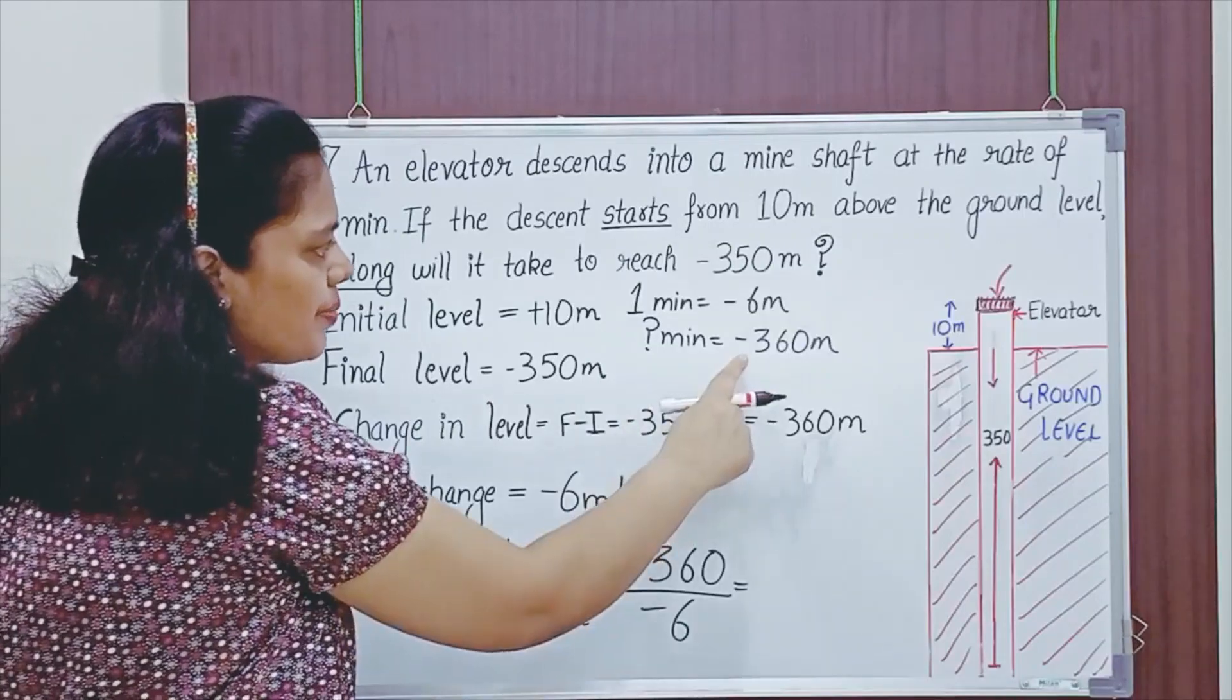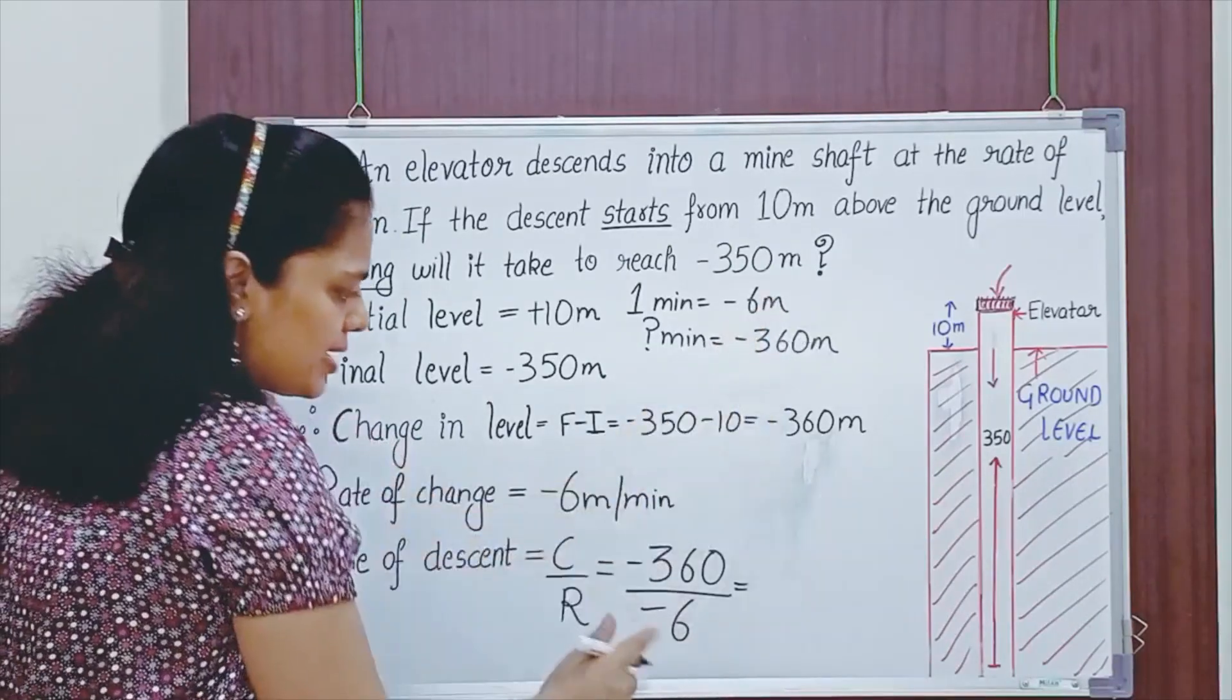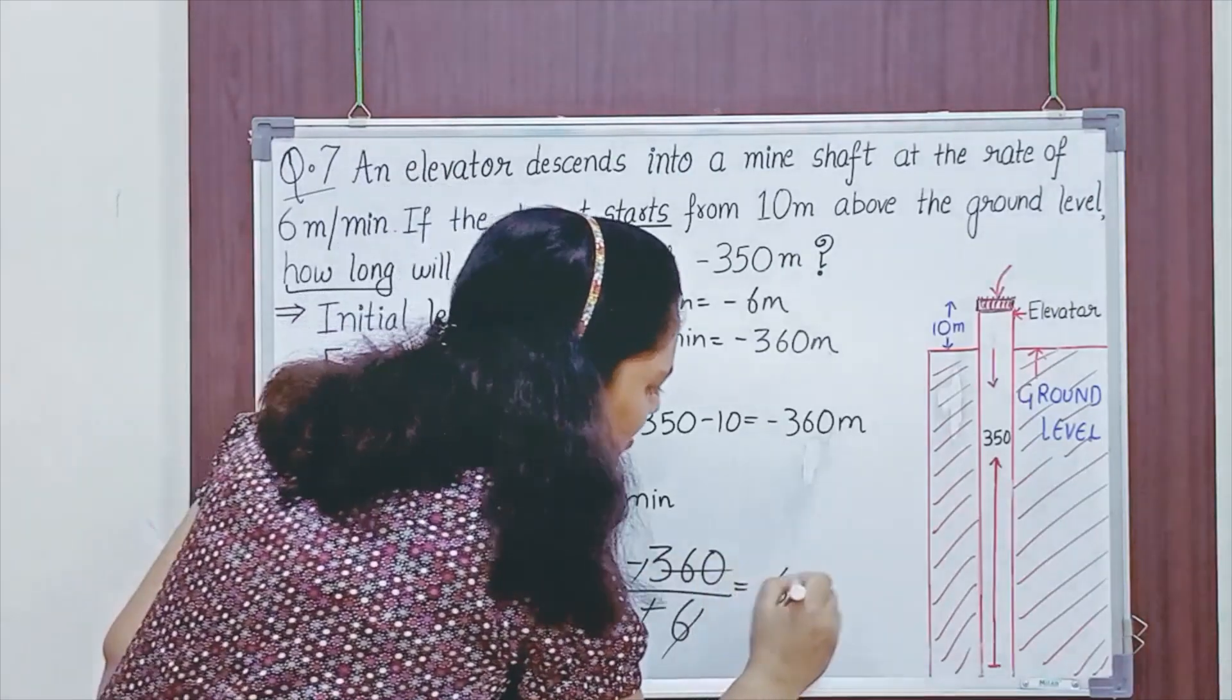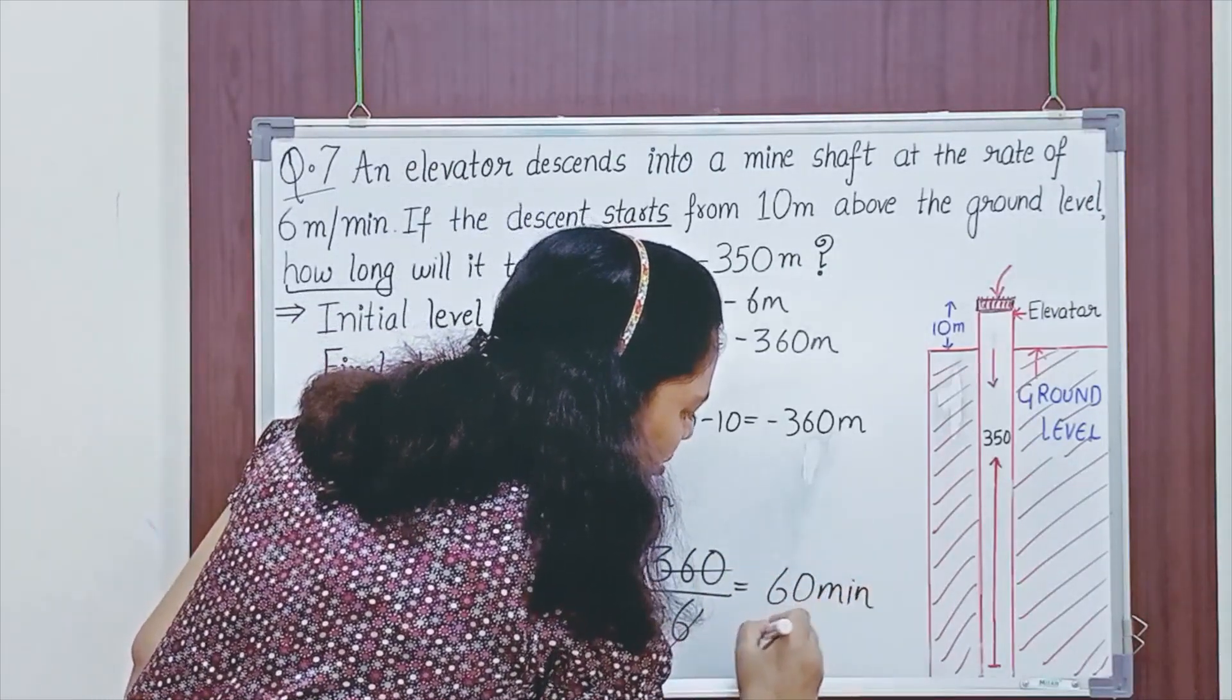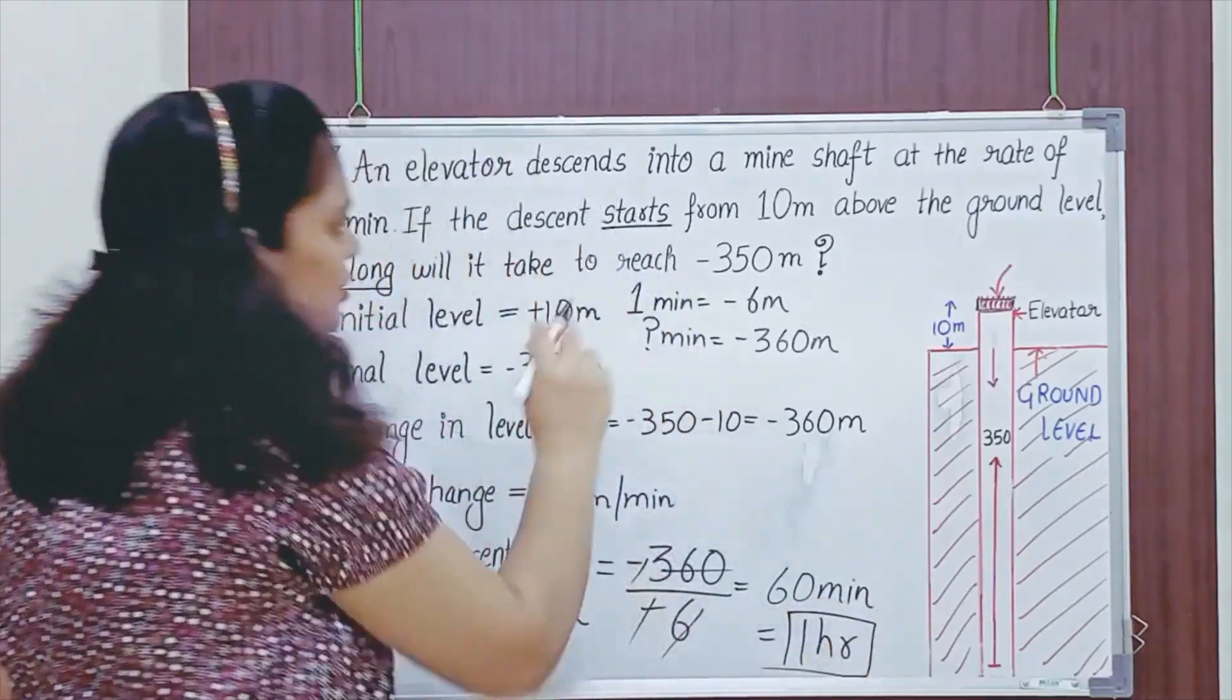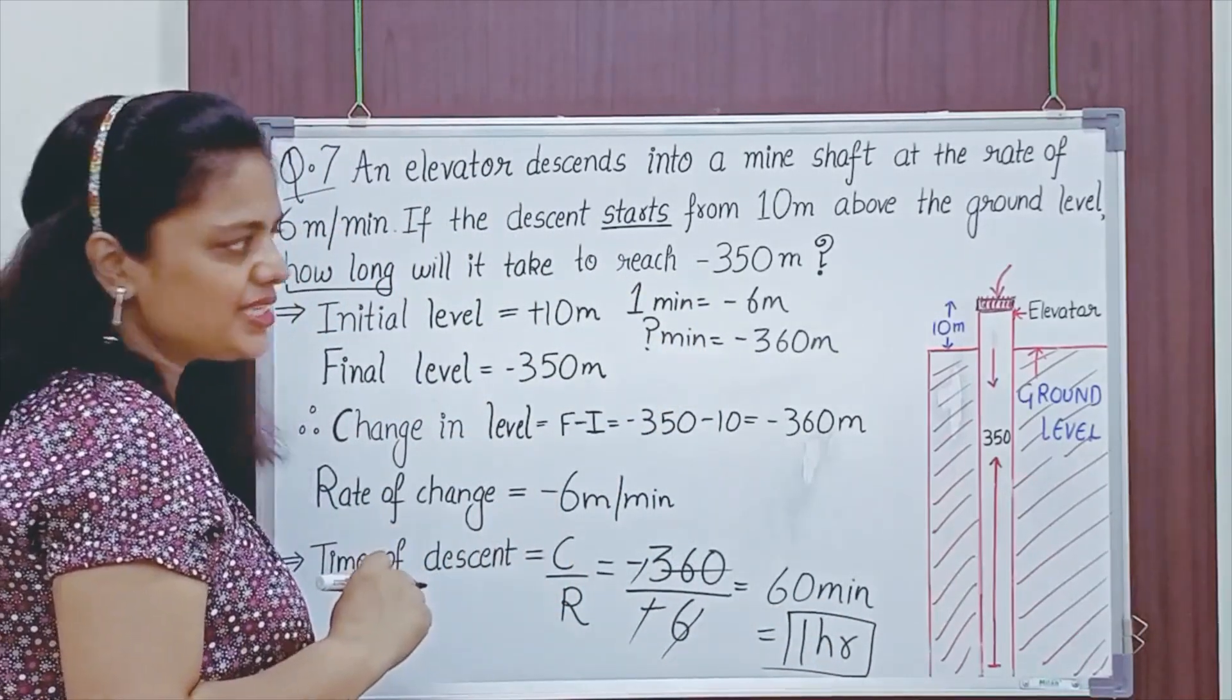So, time of descent would be minus 360 upon minus 6. Minus will get cancelled with minus. So, this would be 60 minutes. 60 minutes is also equals to 1 hour. So, 1 hour is the time of descent to reach minus 350 meters.